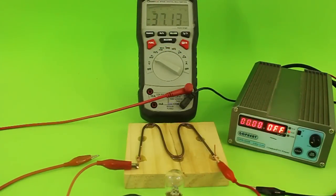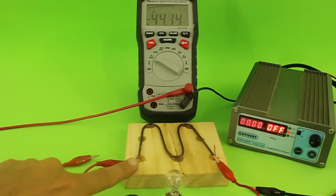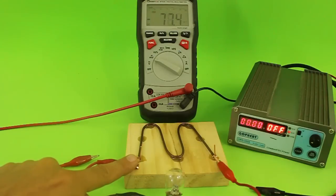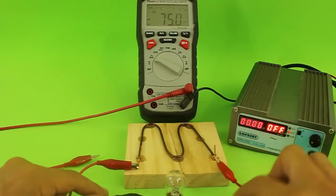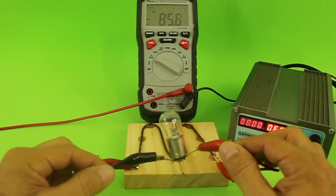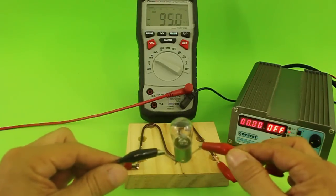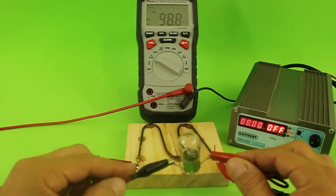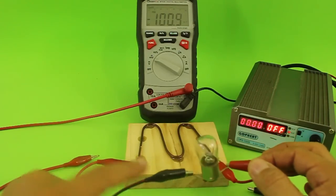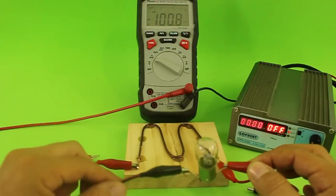Let's now test how our shunt works. I have connected the positive of the power supply to one end of the shunt, the other end of the shunt to our load that is this lamp and the other end of the lamp to the negative of the power supply. Therefore we have the lamp and the shunt in series.